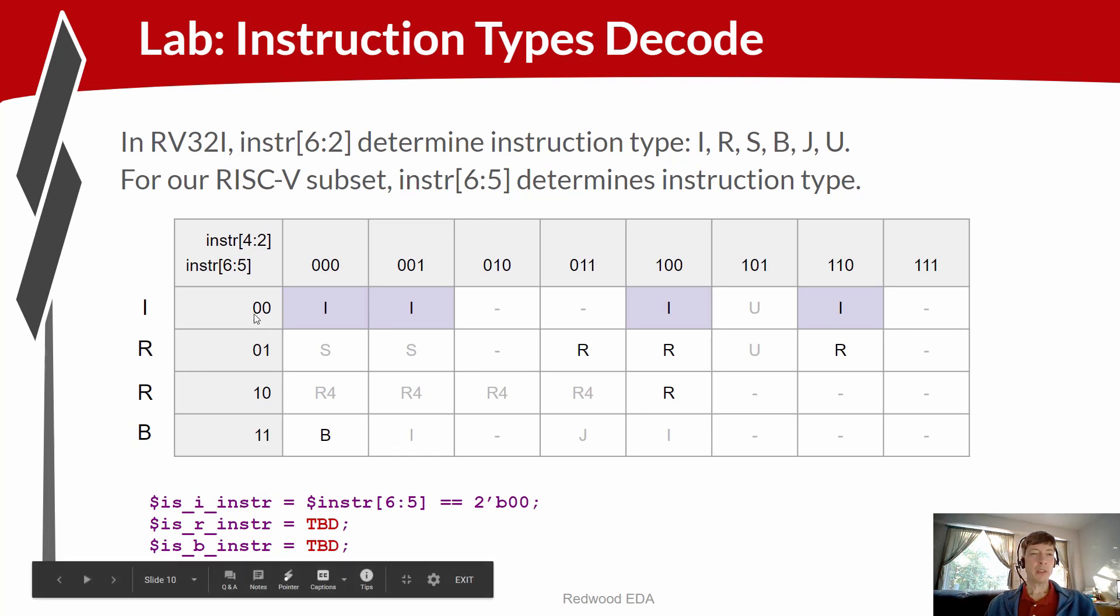So these two bits here that determine which row we're on are instruction bits six and five. So based on instruction six and five, for I type, if these bits are zero, zero.